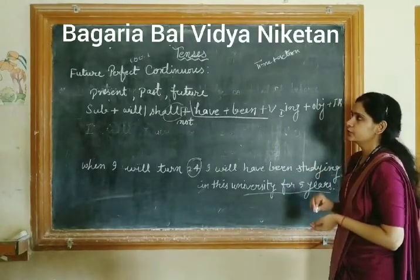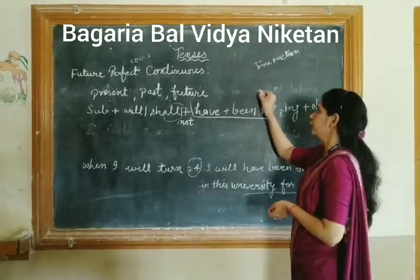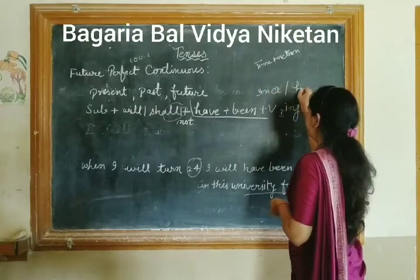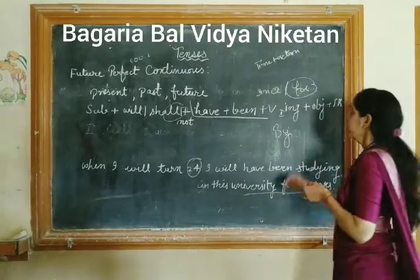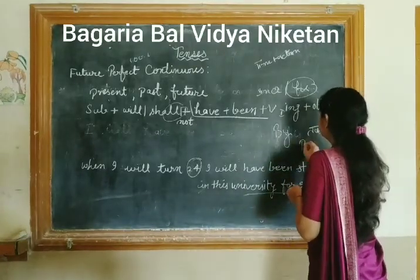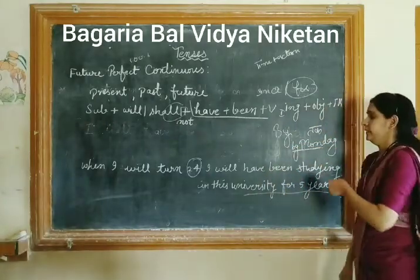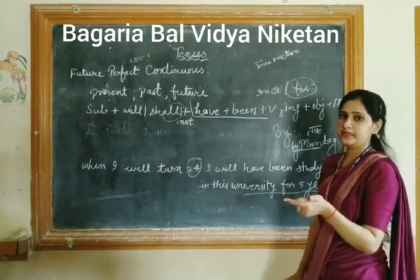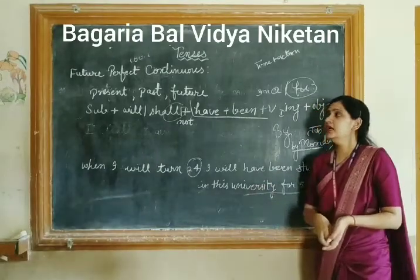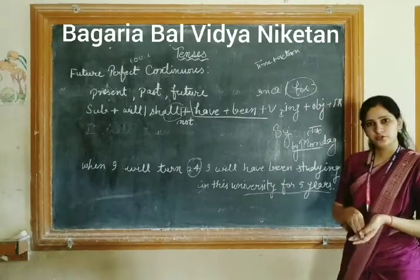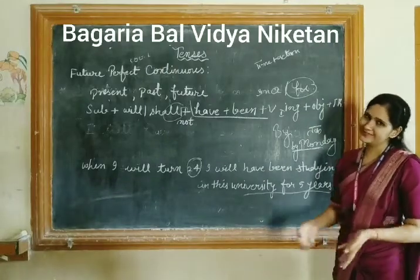This was our future perfect and future perfect continuous tense. The time reference using 'since' and 'for' applies here as before. One new addition is the time reference word 'by' — for example, 'by Monday' — which we can easily use in these tenses. In our next video session, we will do the exercises given in your grammar book. Thank you everyone.